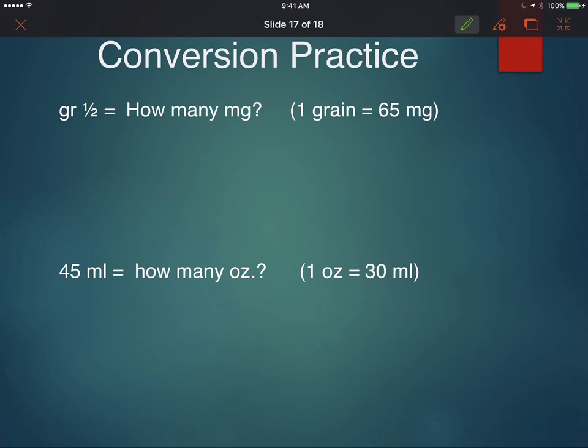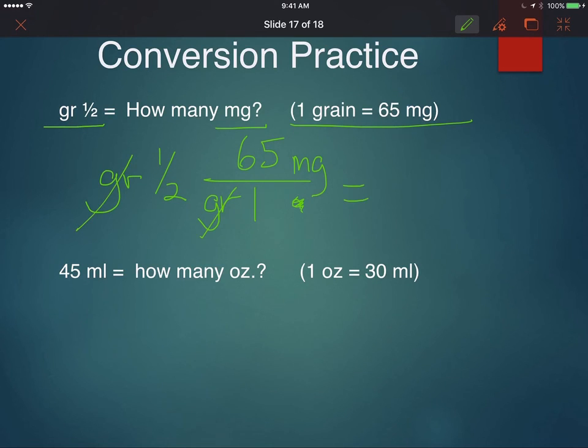Let's go over the answers. First question asks, half a grain is equivalent to how many milligrams? I've given you the conversion, one grain equals 65 milligrams. I'm going to put grain down here, not here, otherwise it'll look like gram. Milligrams up on the top. 65 milligrams is equivalent to one grain. Cancel units. So the problem becomes 65 times a half, or 65 divided by two, which equals 32.5 milligrams.